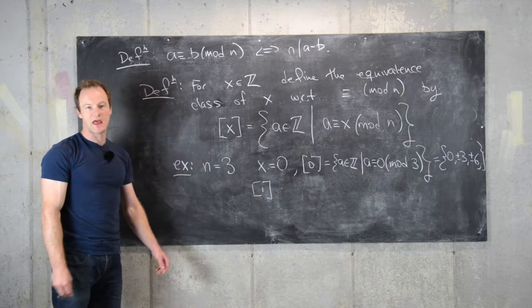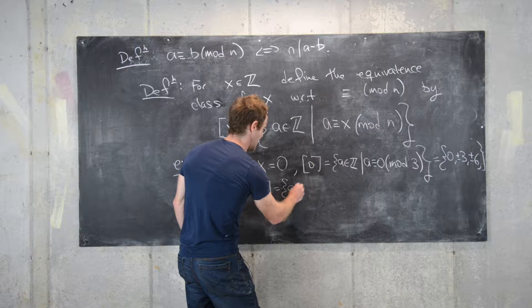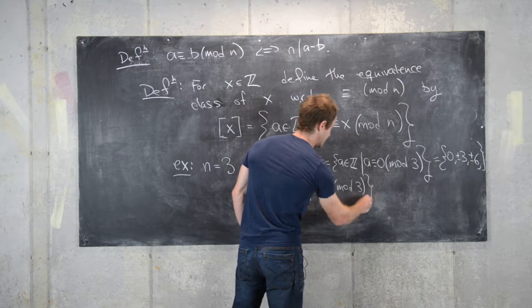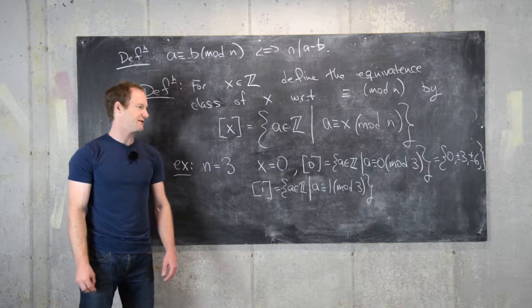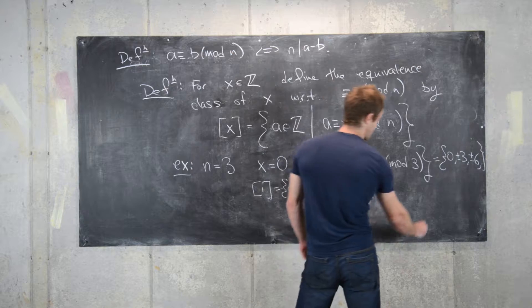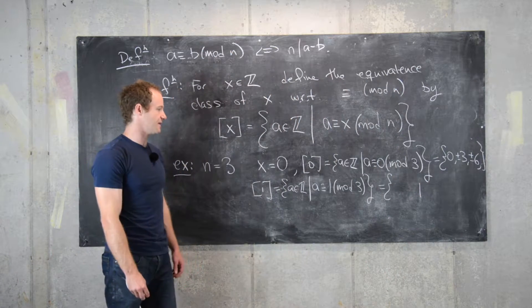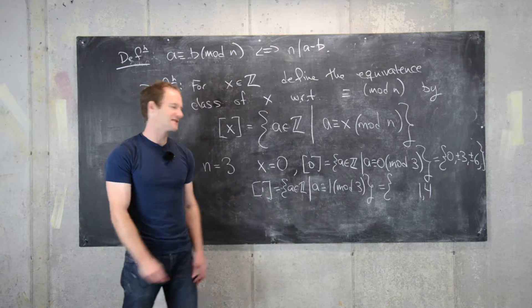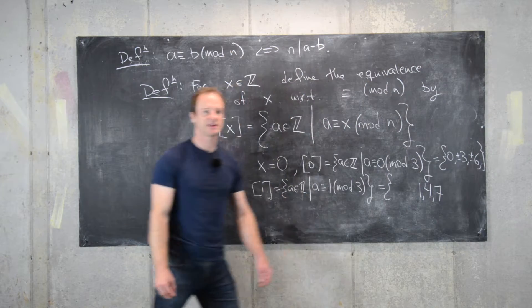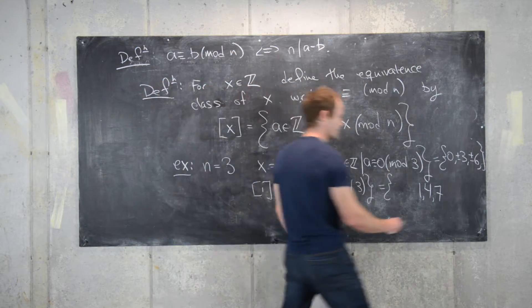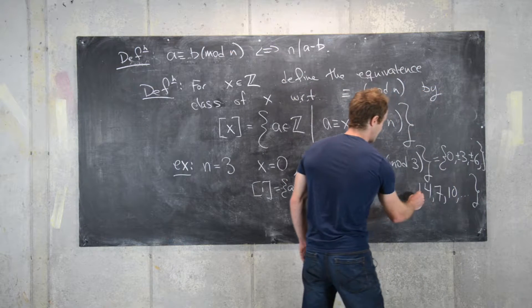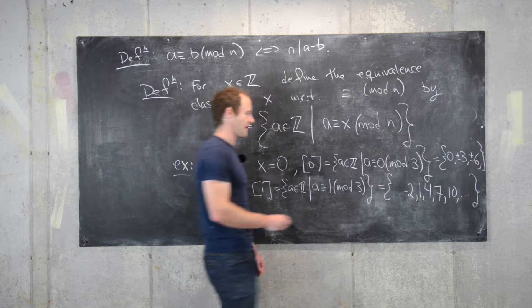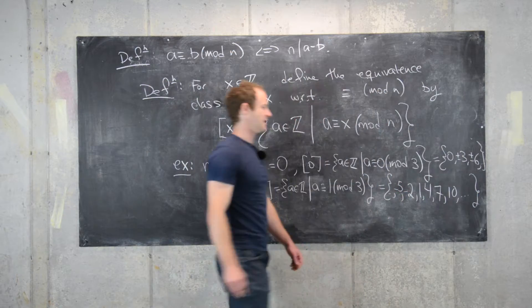Now let's look at the equivalence class of 1, using the same n of 3. That's equal to all a in Z such that a is congruent to 1 mod 3, meaning a minus 1 is divisible by 3. So 1 is in this set because 1 minus 1 is 0, which is divisible by 3. Then 4 is a member because 4 minus 1 is 3, divisible by 3. Then 7 is in this set because 7 minus 1 is 6, divisible by 3. Going backwards, negative 2 is in this set, and so on.